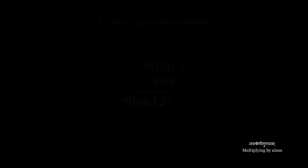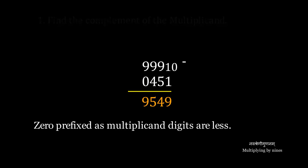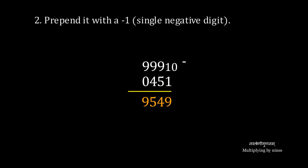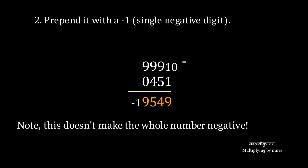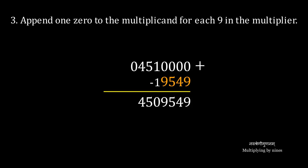Now, let's try an example with more nines than there are digits in the multiplicand. We prefix a zero to the multiplicand before taking its complement to make its number of digits be at least as much as the multiplier. We prefix a negative one again, as usual. We append four zeros to the multiplicand because there are four nines in the multiplier.